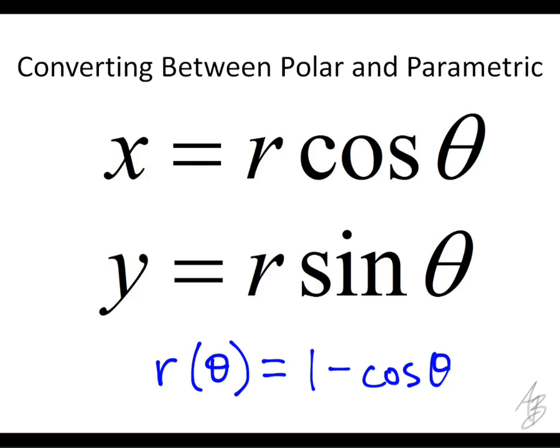And so what we can do is we can plug this 1 minus cosine of theta in for R here, and for R here, and we have parametric equations where the parameter here is going to be theta instead of T.